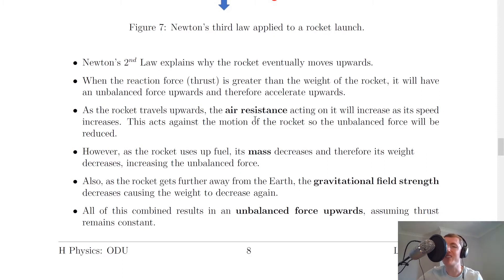And we're now going to look at how the air resistance, the mass of the rocket and the gravitational field strength all affect the motion of the rocket. So as the rocket travels upwards, the air resistance acting on it will increase as its speed increases.